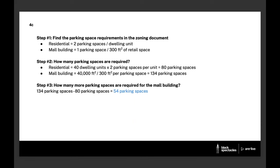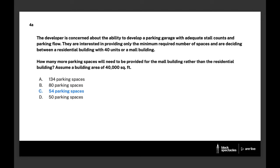For the residential building: 40 dwelling units multiplied by 2 parking spaces equals 80 parking spaces required. For the mall building: 40,000 square feet divided by 300 square feet per space equals 134 parking spaces required. The question asks how many more spaces the mall building needs: 134 minus 80 equals 54 additional parking spaces. The correct answer is C, 54 parking spaces. Note that A (134) and B (80) are numbers used in the calculation — the exam will always give you wrong answers that seem right by using intermediate results. Make sure you're reading the question carefully and answering what's actually being asked.